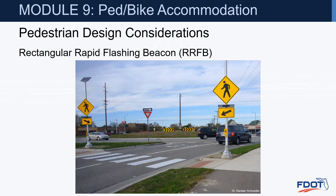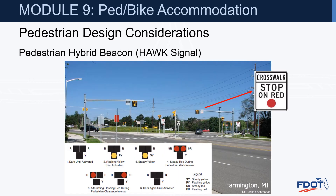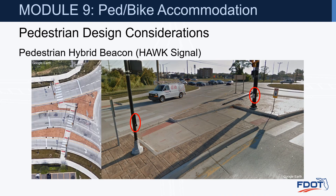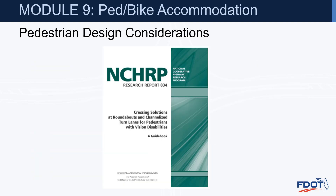There are a couple of traffic control devices that can be used at roundabout crosswalks. The rectangular rapid flashing beacon is a visually enhanced warning device activated by the pedestrian, causing yellow lights to flash. A pedestrian hybrid beacon is also activated by the pedestrian and displays six intervals in a sequence to drivers and pedestrians. Typically a zigzag crossing is provided in the splitter island when utilizing a pedestrian hybrid beacon, offering additional storage for vehicles on the exit. Additional information can be found in NCHRP Research Report 834.